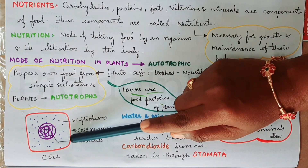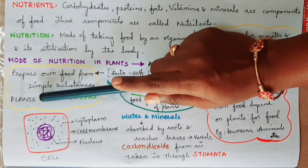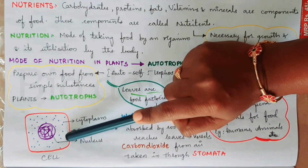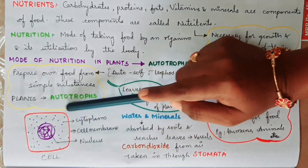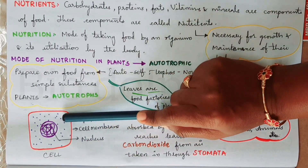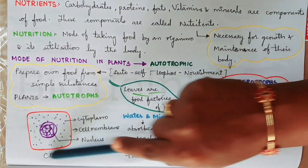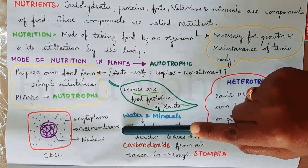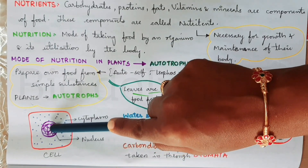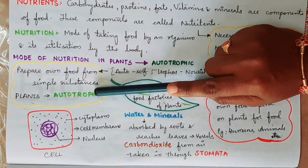The cell is the basic unit of a plant. The plant cell structure includes cell fluid, cytoplasm, a thin cell membrane, and a prominent nucleus.